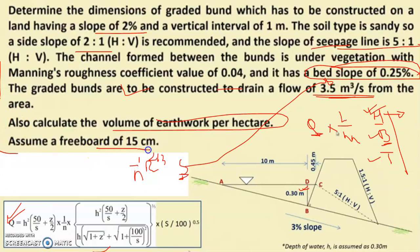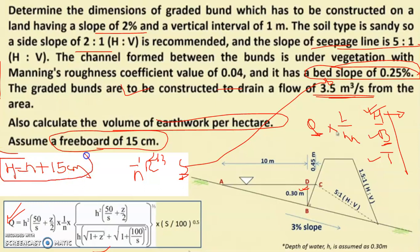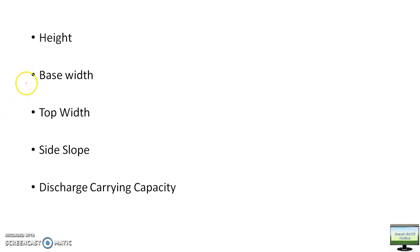Free board is also given as 15 centimeters — it is not given as a percentage, so whatever h you calculate, just add 15 centimeters to get your total height. From reading the question it feels too long, but once you understand, all large problems become very easy. I discussed two problems related to graded bund and one problem related to contour bund. Here you calculate the height and total height.